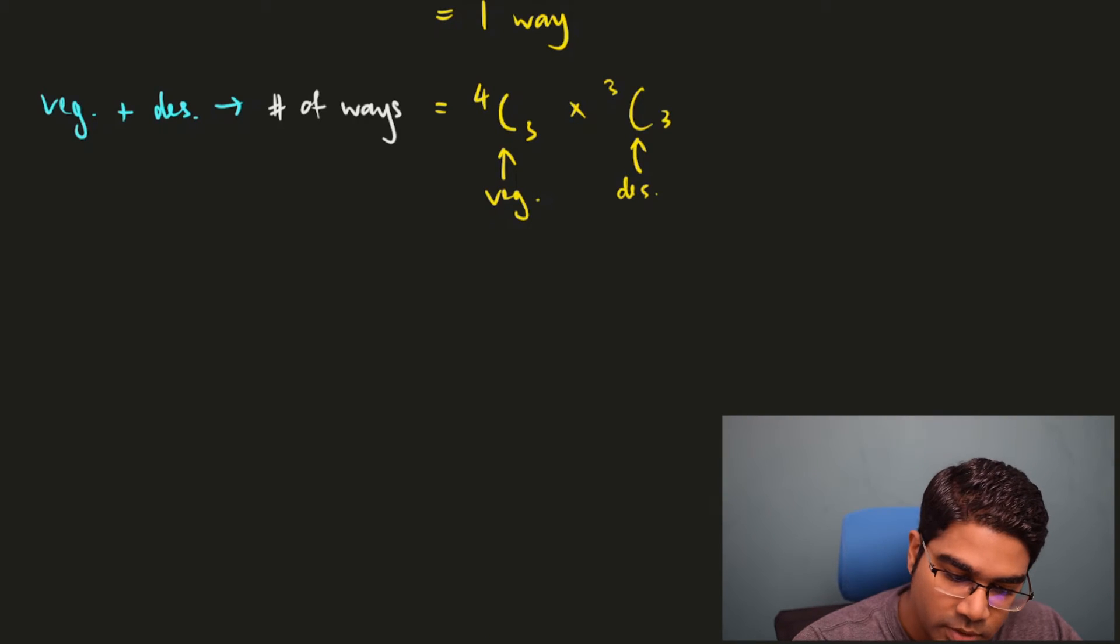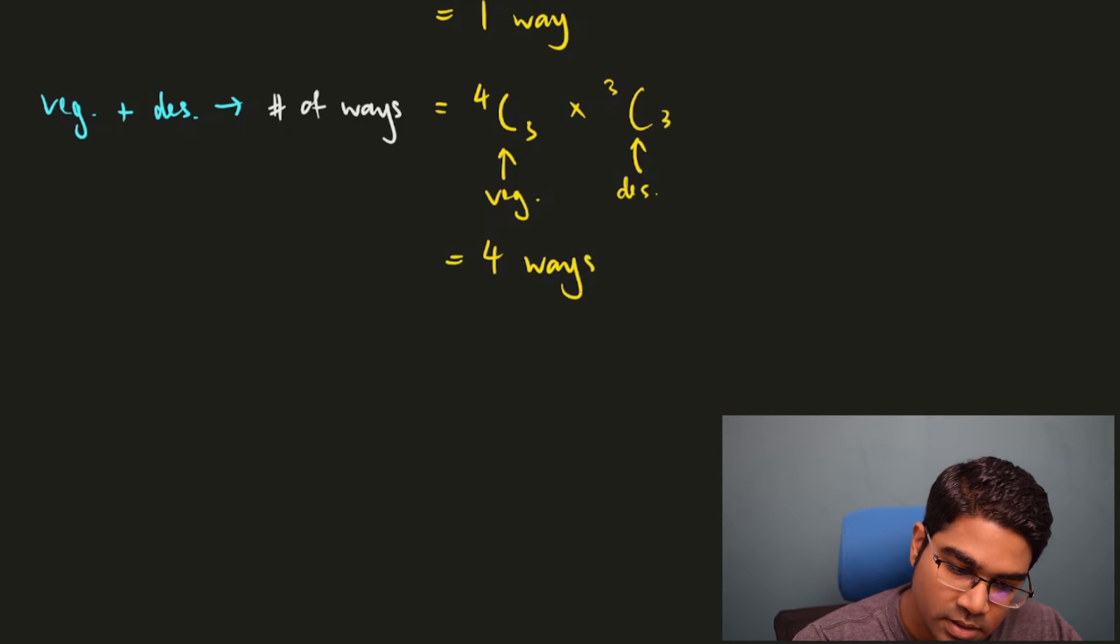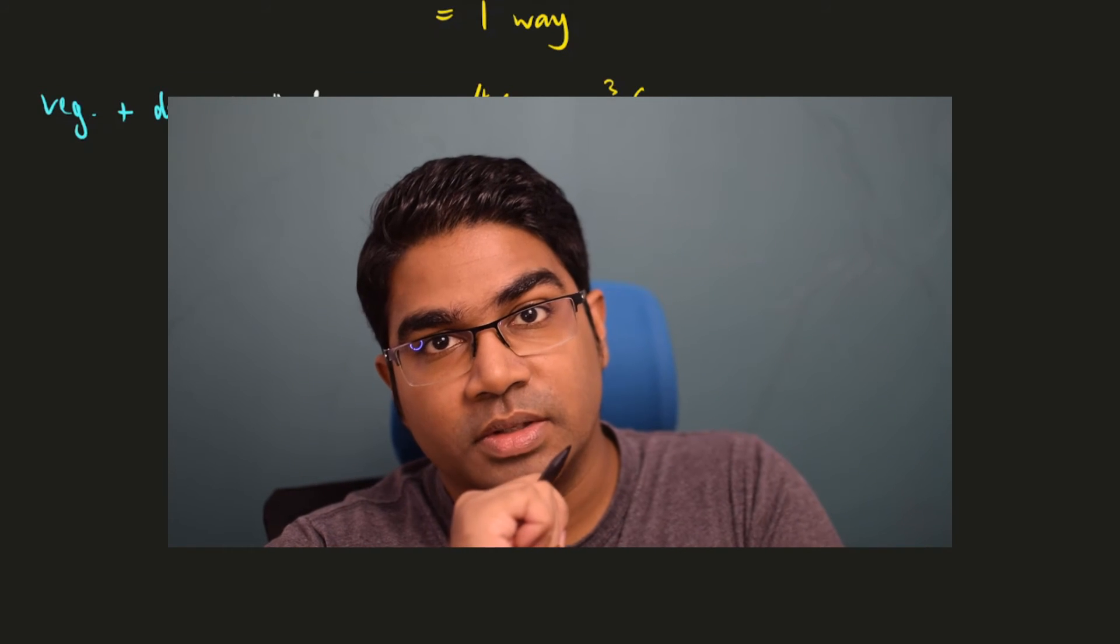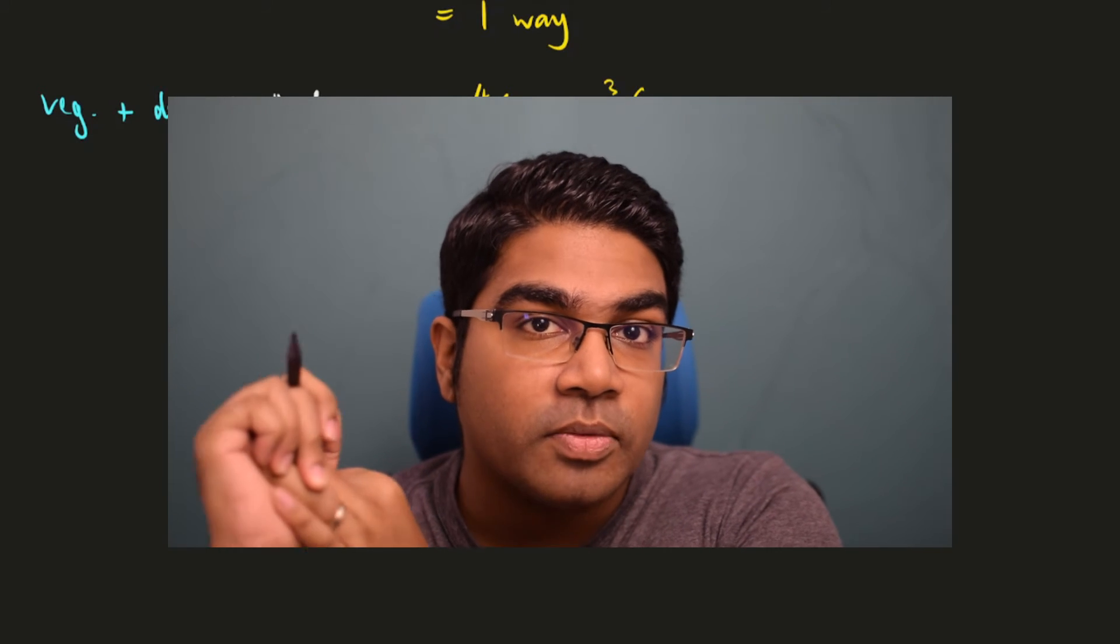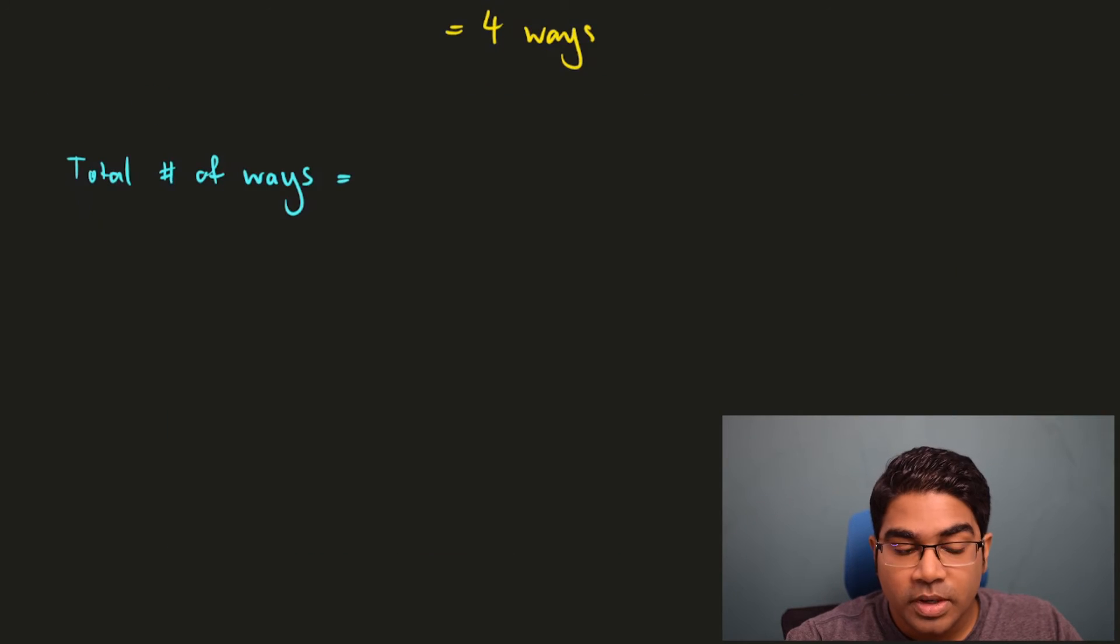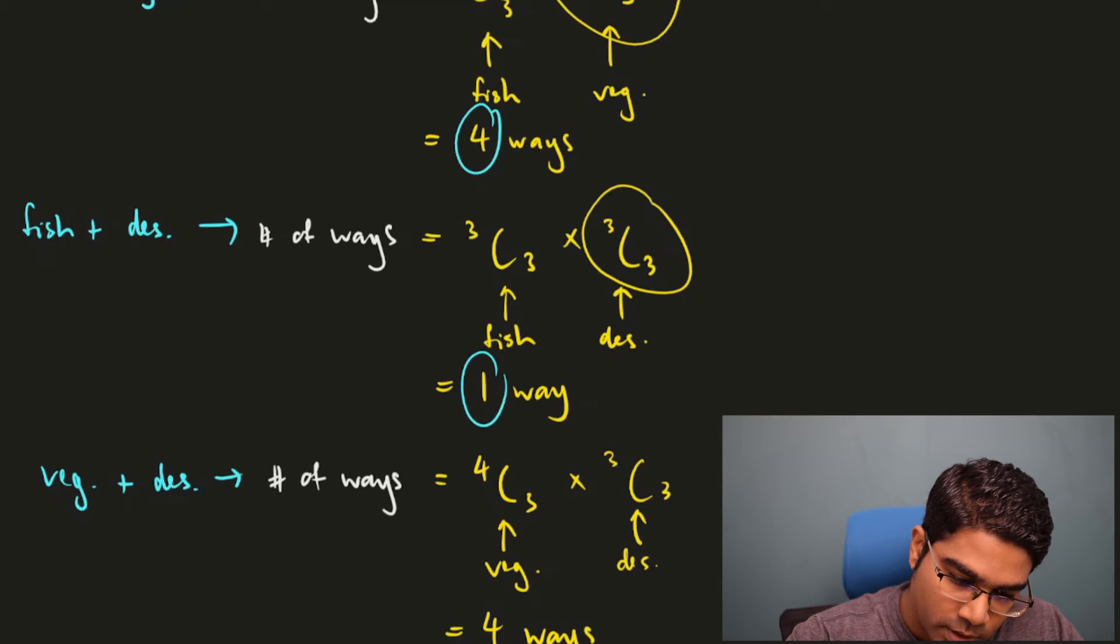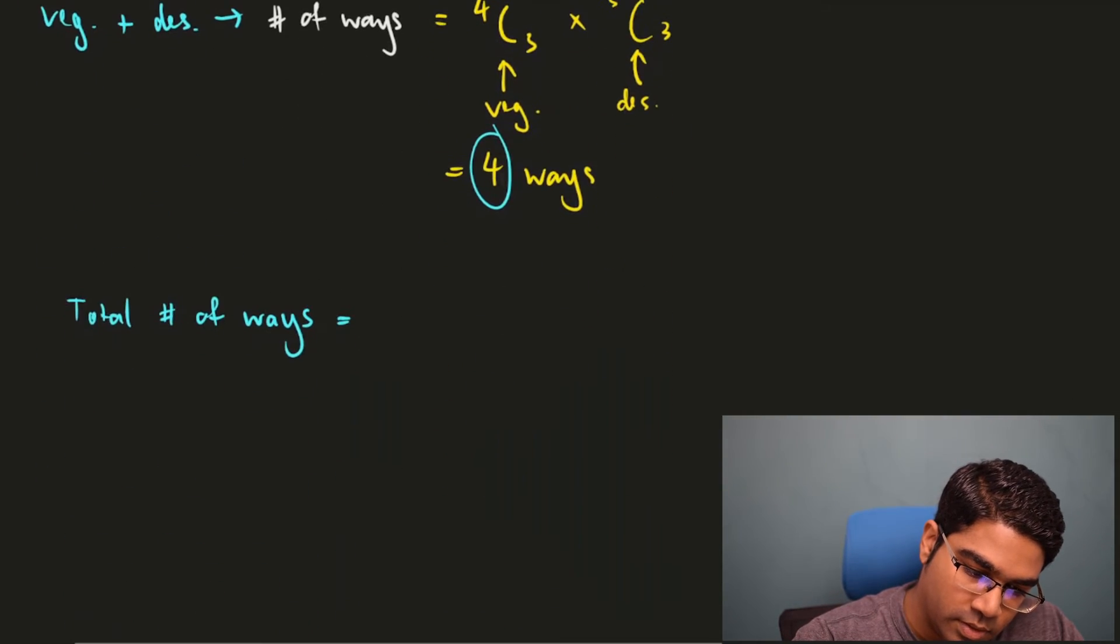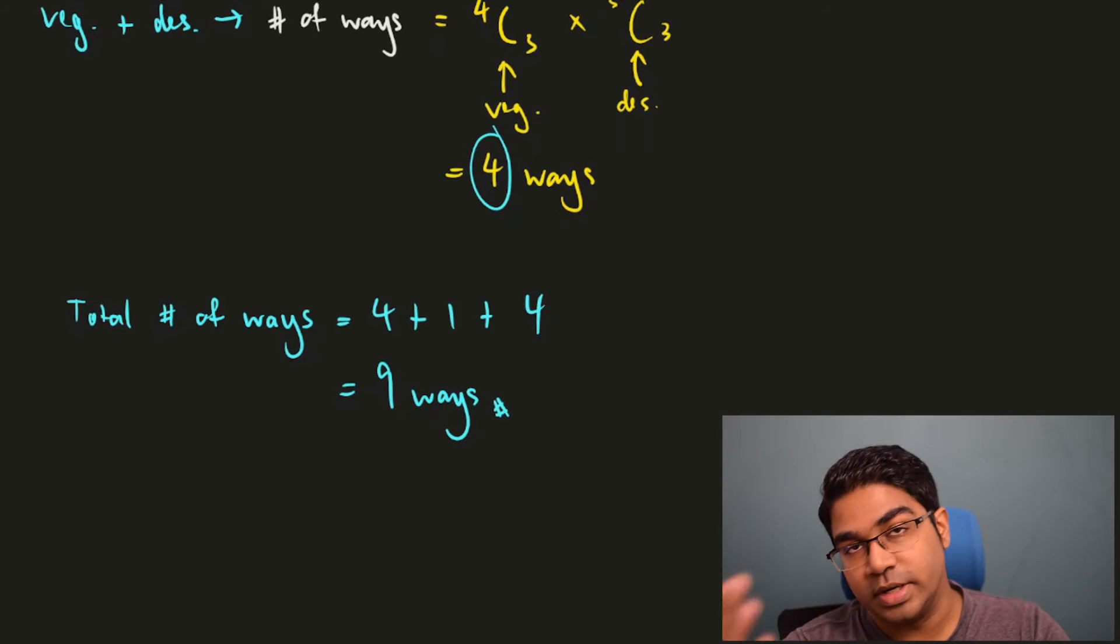What if she chose vegetable and dessert? That would be 4C3 for vegetable and 3C3 for dessert. The total number of ways here would be equals to four as well. Now we have calculated all three possible combinations of types of dishes. And so what is the total number of ways that she can choose? We have to just add them all together. The total number of ways would be equals to four plus one plus four, which is equals to nine. Eve has a total of nine ways she can choose to cook dishes.